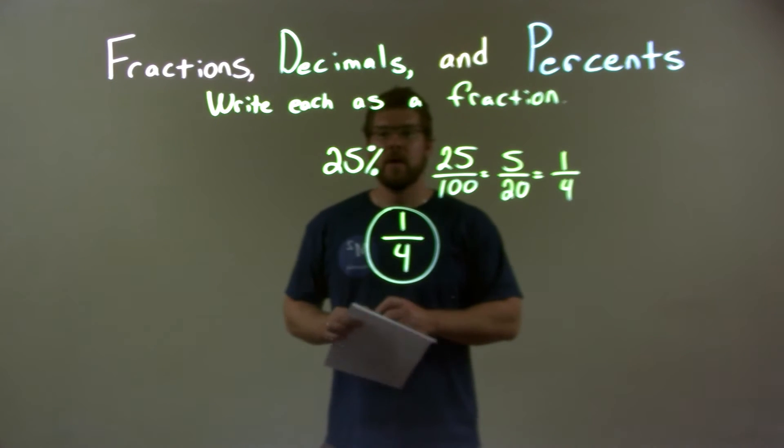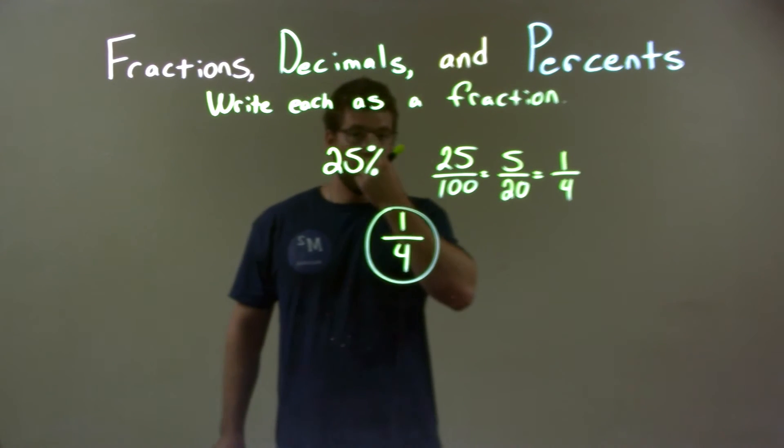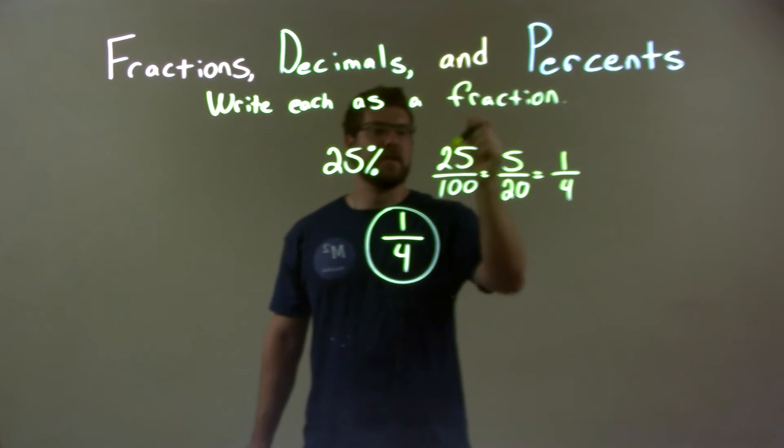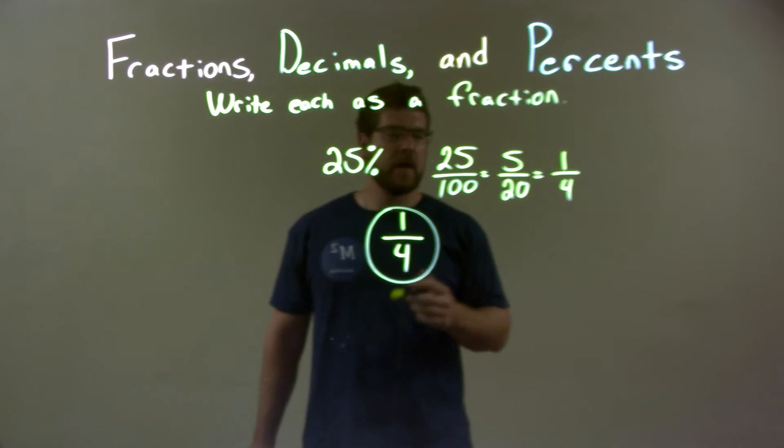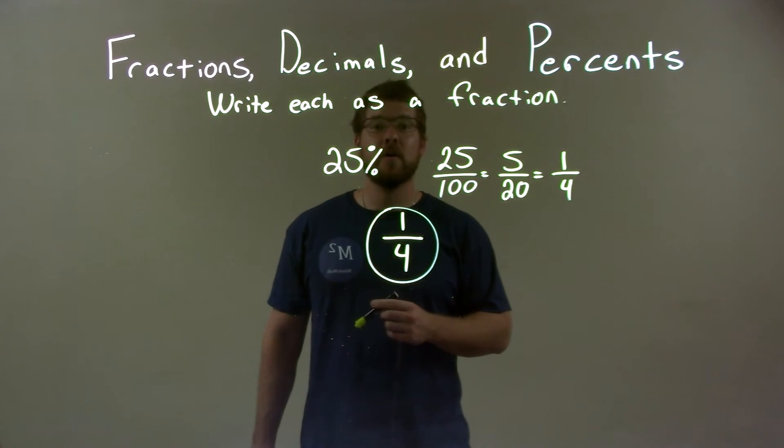So quick recap, given twenty-five percent, we have to write that as a fraction. So twenty-five percent of a total of a hundred percent, this gives us twenty-five over one hundred. We then simplify that to give us one-fourth, and so our final answer as a fraction is just one-fourth.